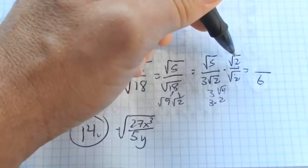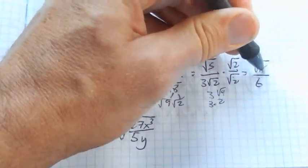And up top, square root of 5 times square root of 2, that numerator, square root of 10.